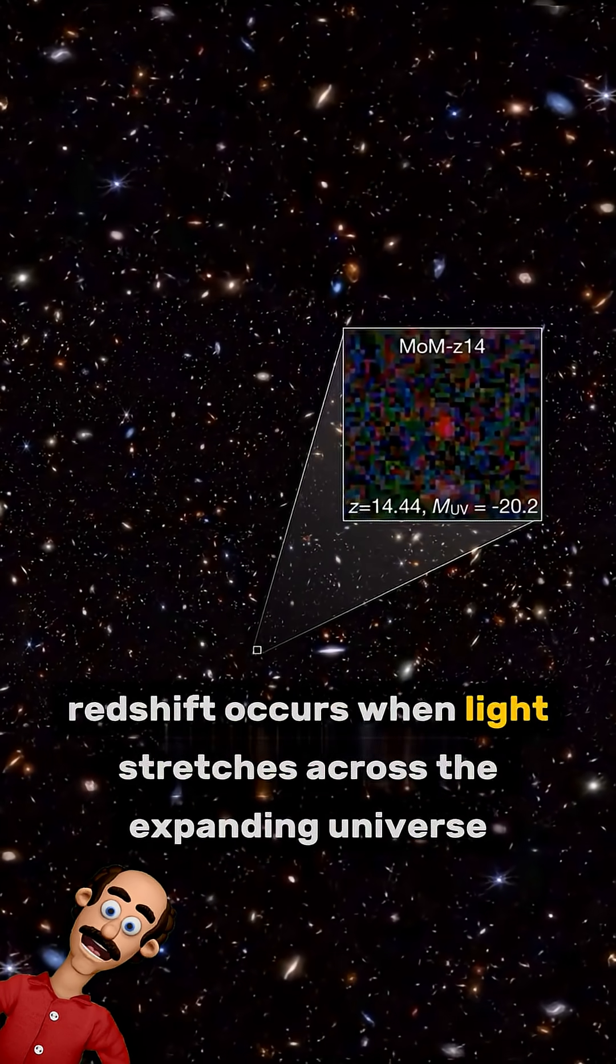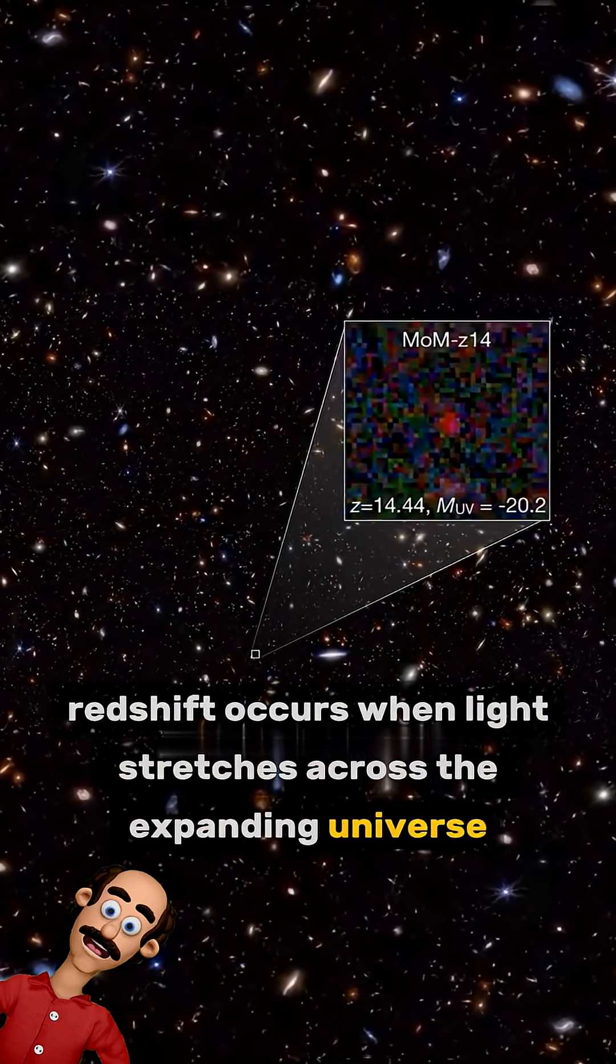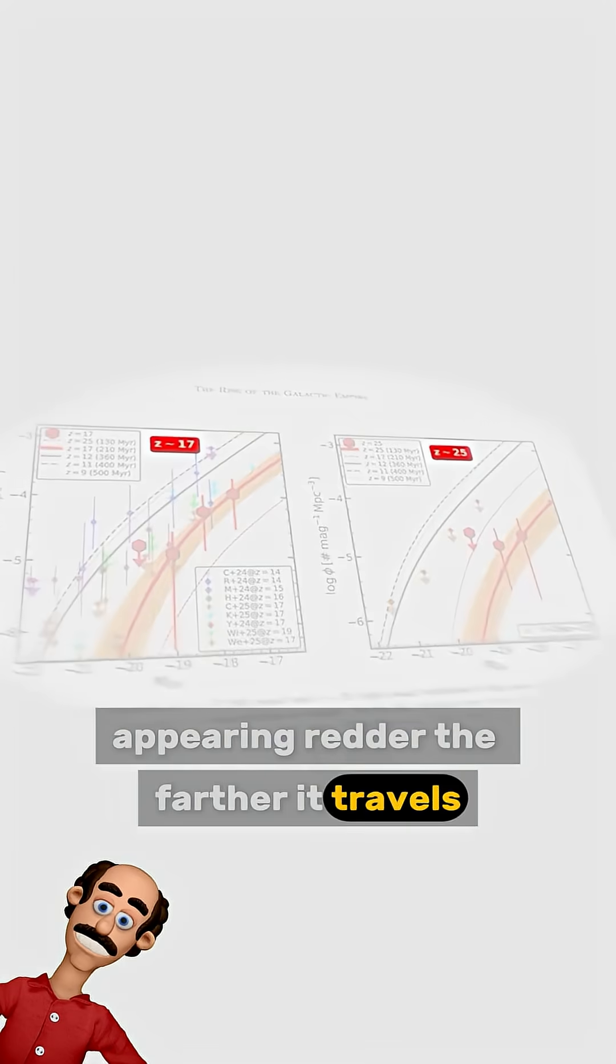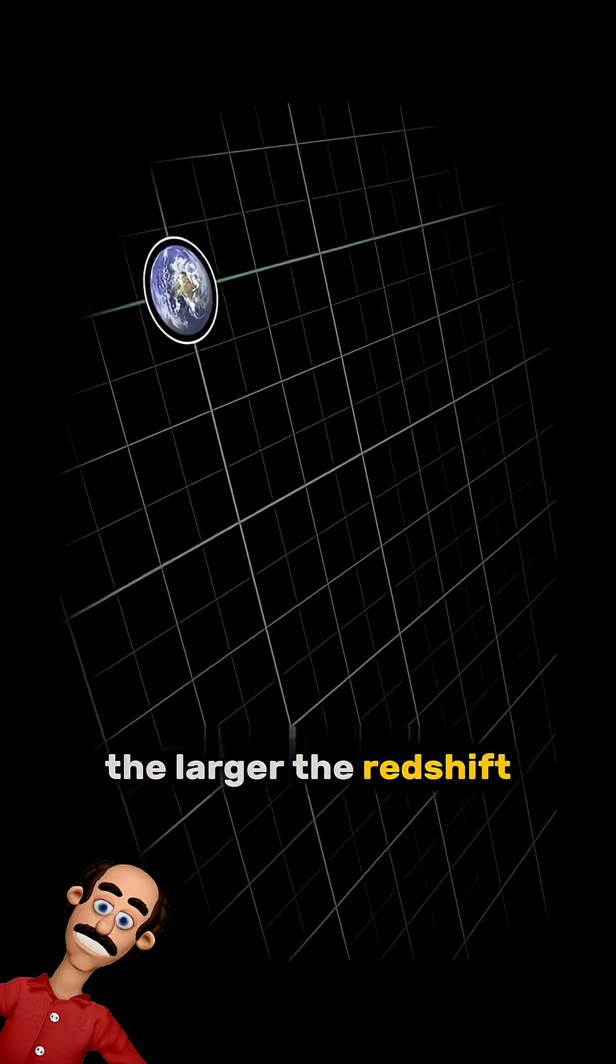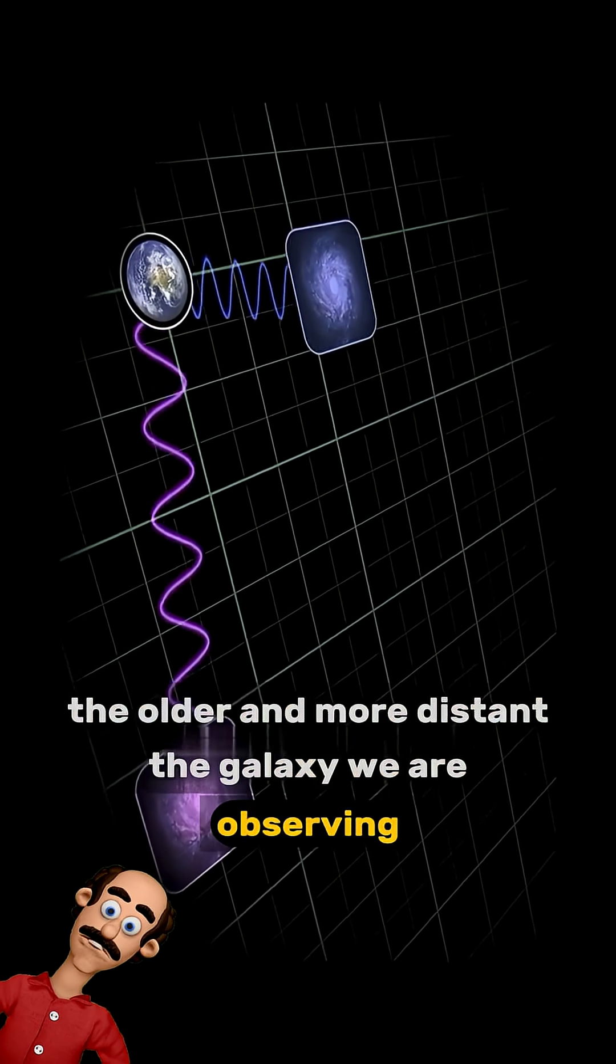Redshift occurs when light stretches across the expanding universe, appearing redder the farther it travels. The larger the redshift, the older and more distant the galaxy we are observing.